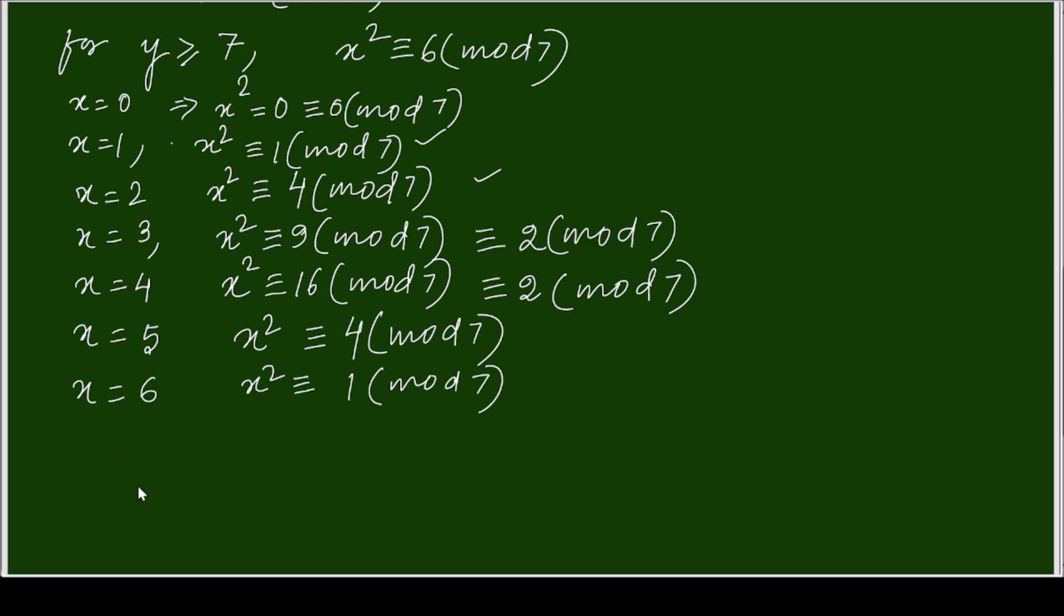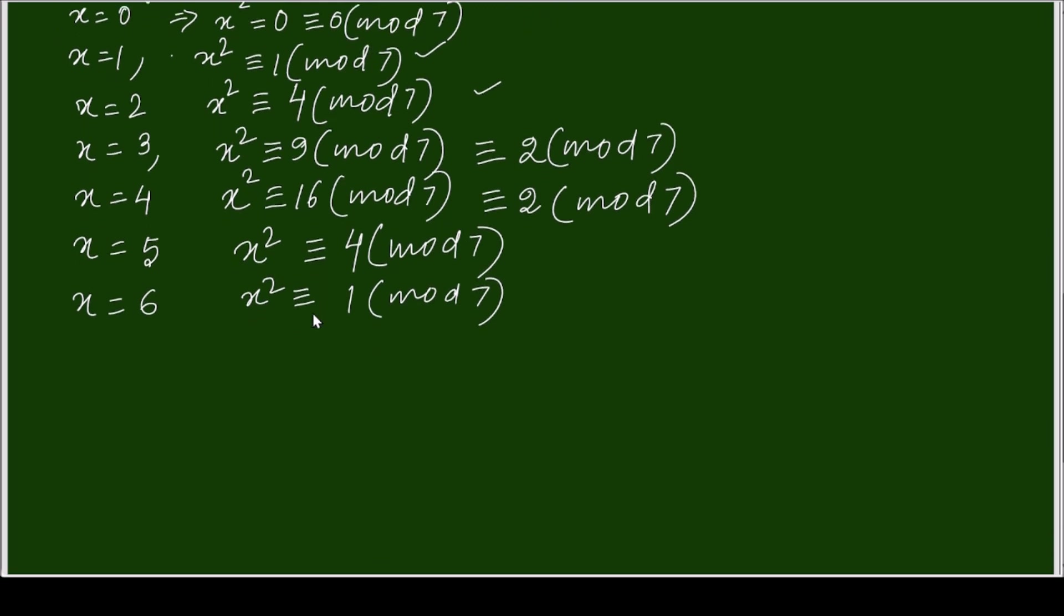So what does it mean? And when x is equal to 7, I am repeating, it will be 0. What does it mean? That means x square for any value,